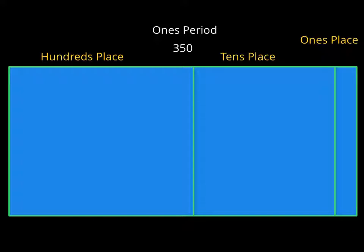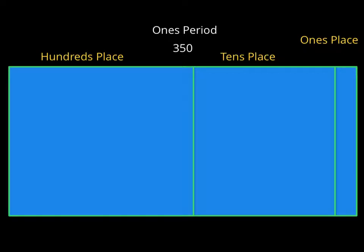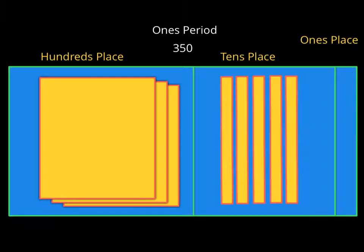Last problem this way, and then we're going to switch it. The number 350 — there's a zero there. We would put 3 hundreds blocks, five tens, and this time no ones, because there's nothing there.